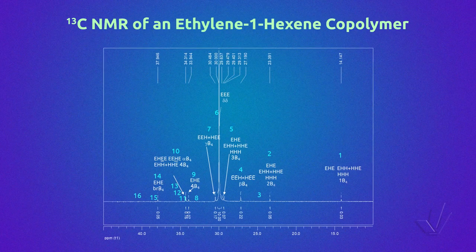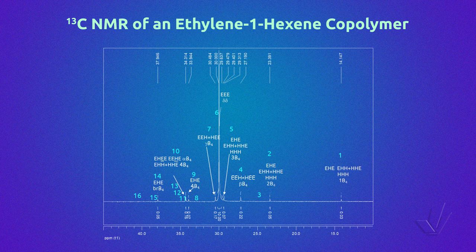Here we have an example of an ethylene-1-hexene spectrum. All the possible peaks are marked in blue. As we can see, not all the peaks are present. That means that some of the triads do not exist.